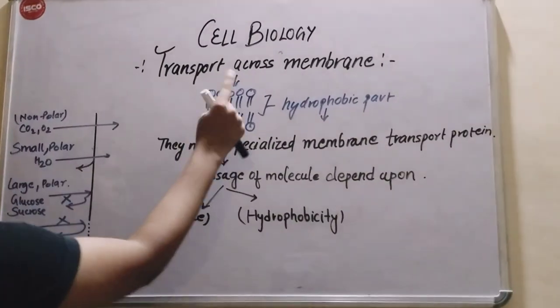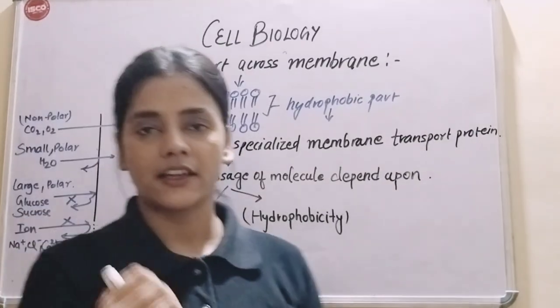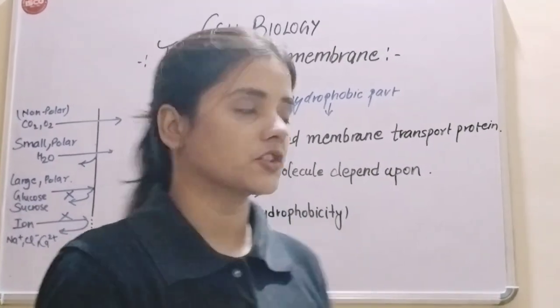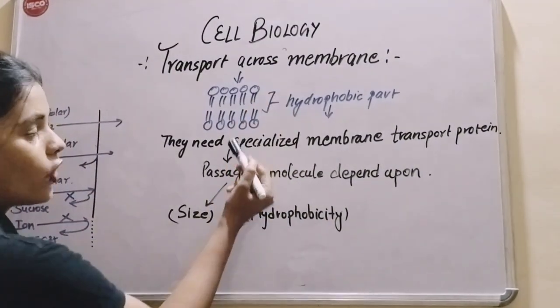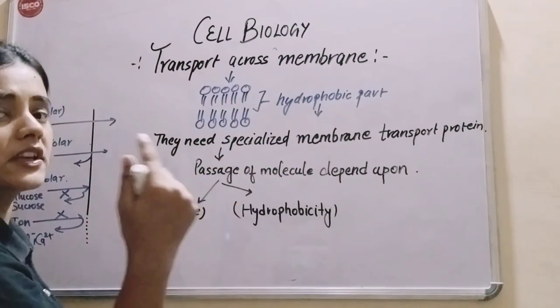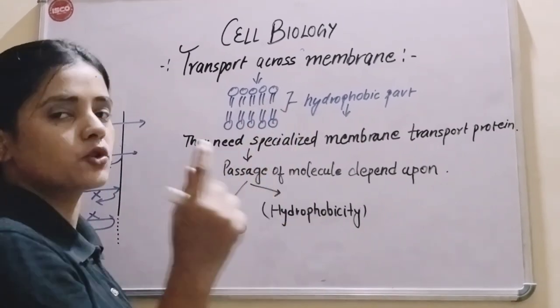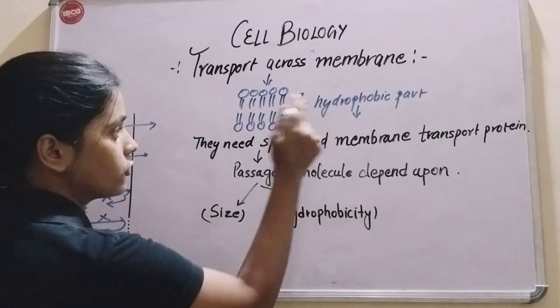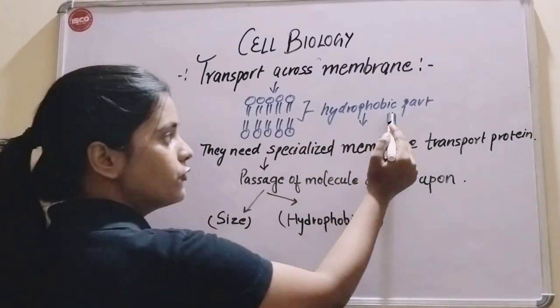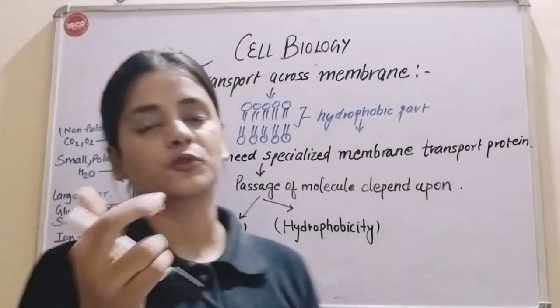Today we are going to discuss transport across membrane. The lipid bilayer has a hydrophobic part inside. This hydrophobic part creates a barrier that polar molecules need help to pass through.